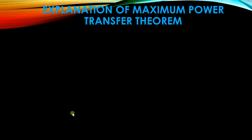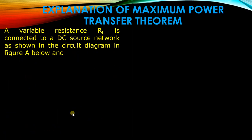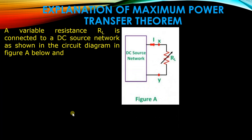For the explanation of the Maximum Power Transfer Theorem, a variable resistance RL is connected to a DC source network as shown in the circuit diagram in figure A. We have the DC source network, and this is the variable load resistance connected across terminals X and Y, with current I flowing in the circuit.